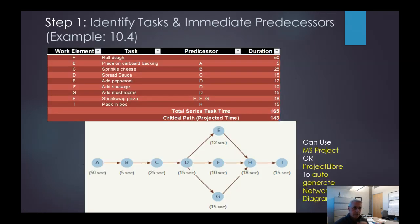So step one, first of all, we need to identify what the tasks are, what their immediate predecessors are. In this case we have example 10.4 that we're using. We have different work elements which we've labeled A through I. This is making a pizza essentially. We start with rolling the dough, place the dough on the cardboard backing, sprinkle cheese, spread sauce, add pepperoni, sausage, mushrooms, shrink wrap pizza, pack it. So once we know what those are, now we know what the order can be. The first thing before we can do anything else is we have to roll the dough. So there's no other predecessor. It's the very first thing that we have to do.